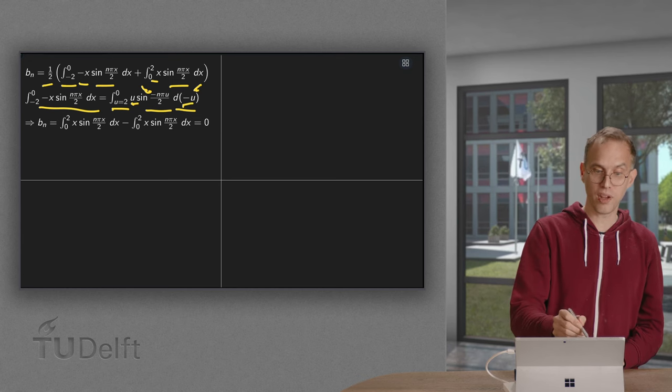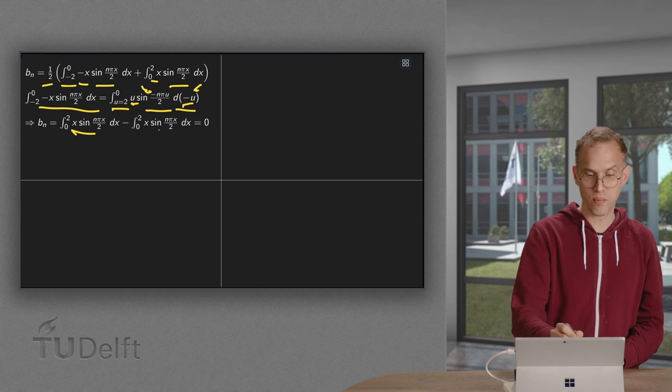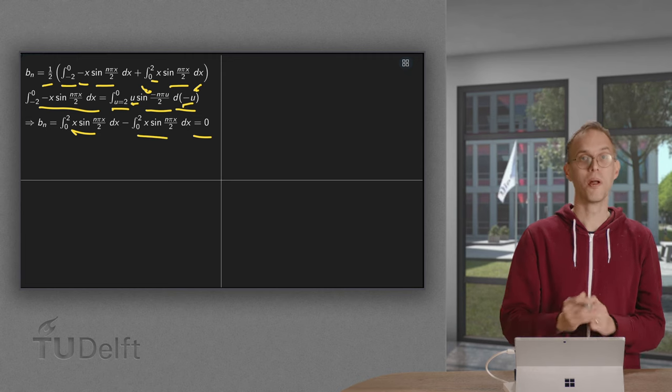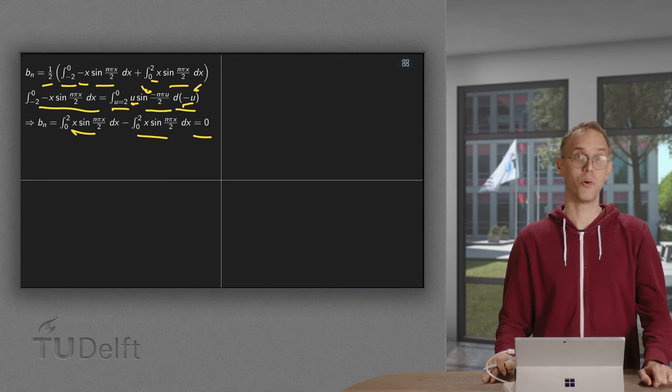Then we are left with an integral minus the same integral, equals 0. So that's nice. The bn are all 0.